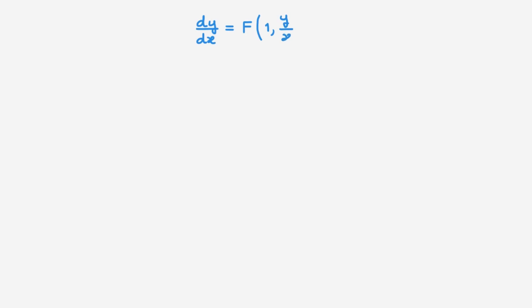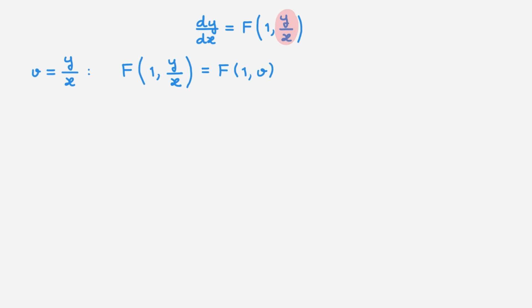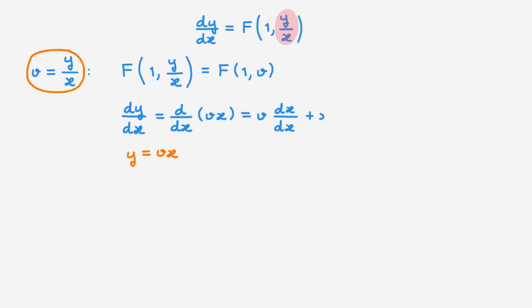The right-hand side no longer depends on x and y separately, but only on their ratio. This motivates us to introduce a new variable v equal to y over x, which allows us to write the function f in terms of v only. We also need to deal with the left-hand side, which involves the derivative of y with respect to x. Using this definition, we can rewrite y as vx, and our derivative becomes, by the chain rule, v plus x dv/dx.